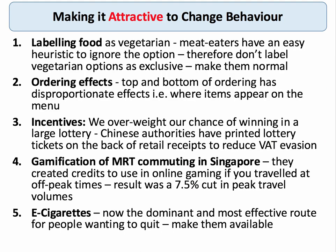The second element of EAST is make it attractive — make it attractive to change behavior. Instead of isolating vegetarians, make vegetarian food part of the normal choice architecture of a menu — don't make it exceptional or exclusive, just normalize behavior. Or put vegetarian or healthy foods at the top and bottom of menus, because that has a disproportionate effect on what people choose. Incentives can make it attractive to change behavior: China's authorities now print lottery tickets on the back of retail receipts as an attempt to reduce VAT evasion. In Singapore, commuters gain credits for online gaming if they travel at off-peak times.